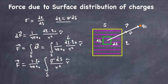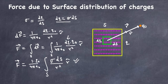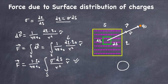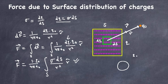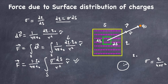As another example, consider a spherical shell with charge distributed on its surface. You can similarly find the force on a test charge q₀. The only difference is the surface charge density Sigma, which equals Q / 4πr², where r is the radius of the sphere, since 4πr² is the surface area of a sphere.